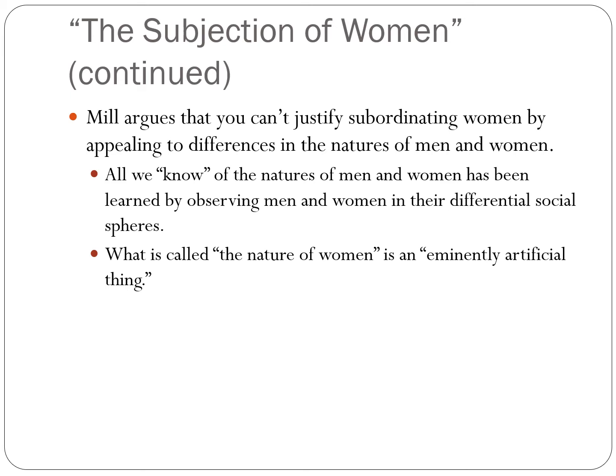Mill says we can't hold the sexes accountable for a nature that is socially constructed. If we were to treat the sexes equally, we would see where there are genuine differences and where there are not. Given the right education and experience, women will succeed in business just as much as men, succeed in government just as much as men. We can't appeal to differential social spheres to create this artificial distinction. What we think of as the nature of a woman is an eminently artificial thing.